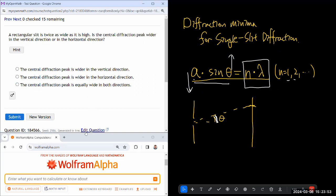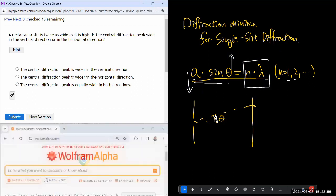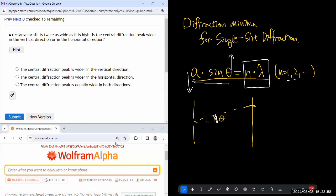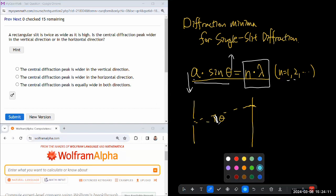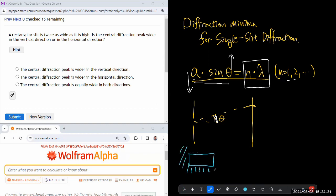Rectangular slit is twice as wide as it is high. Is the central diffraction peak wider in the vertical direction or in the horizontal direction? So let me just draw it to make sure I have this picture in mind. Rectangular slit is twice as wide as it is high, so it's wider than it is tall, something like this. That's the shape of the slit, and I'm looking at the slit head on.